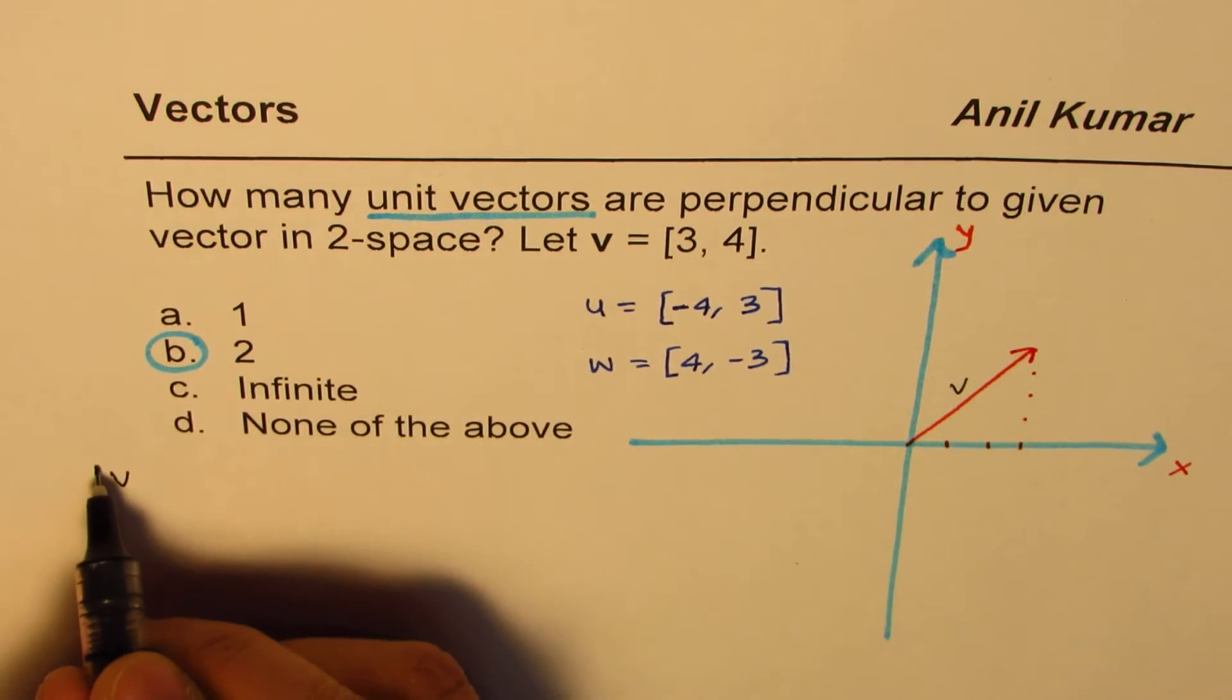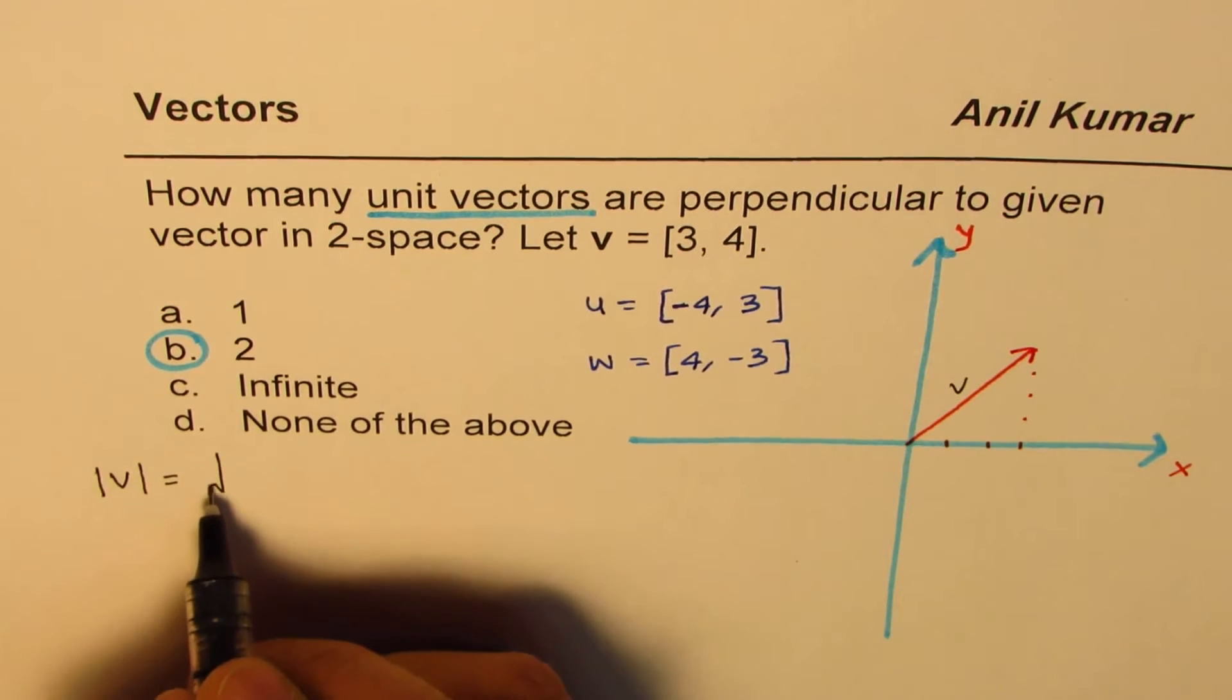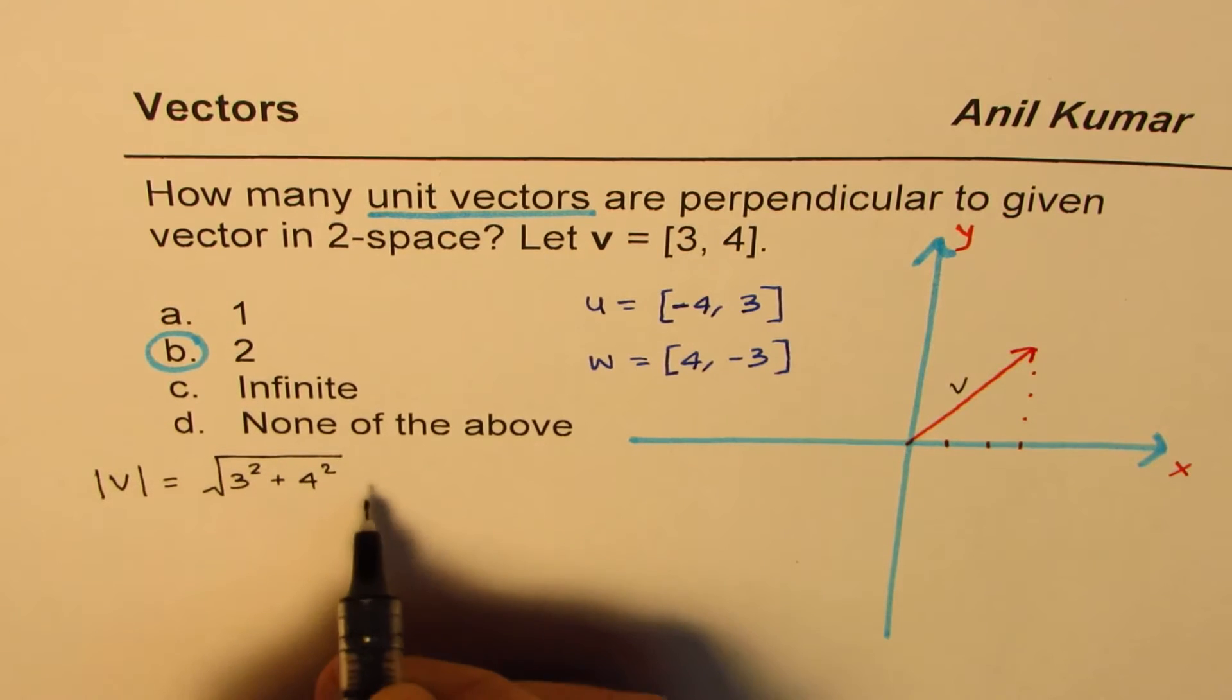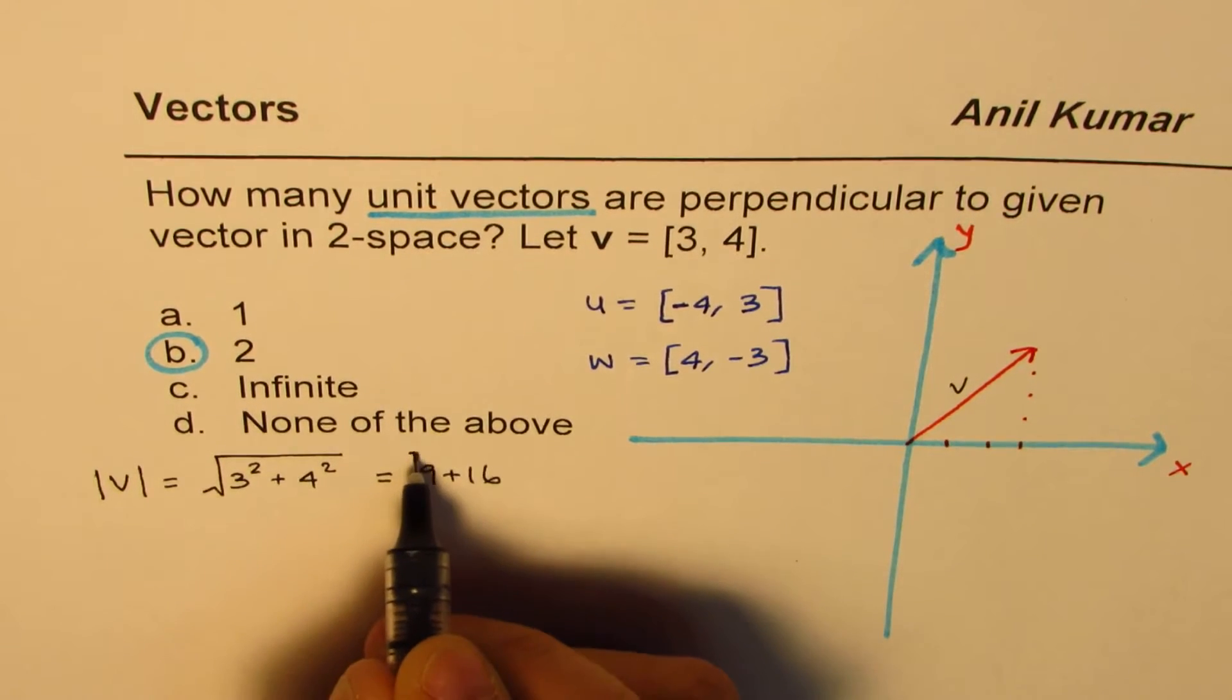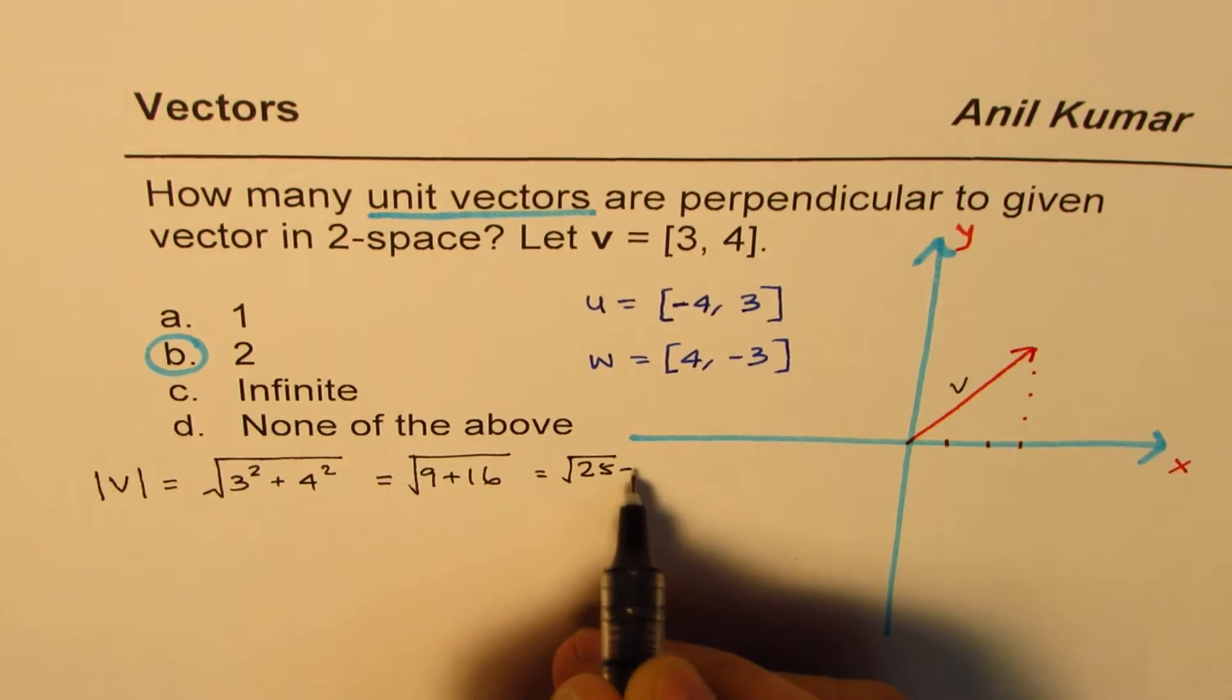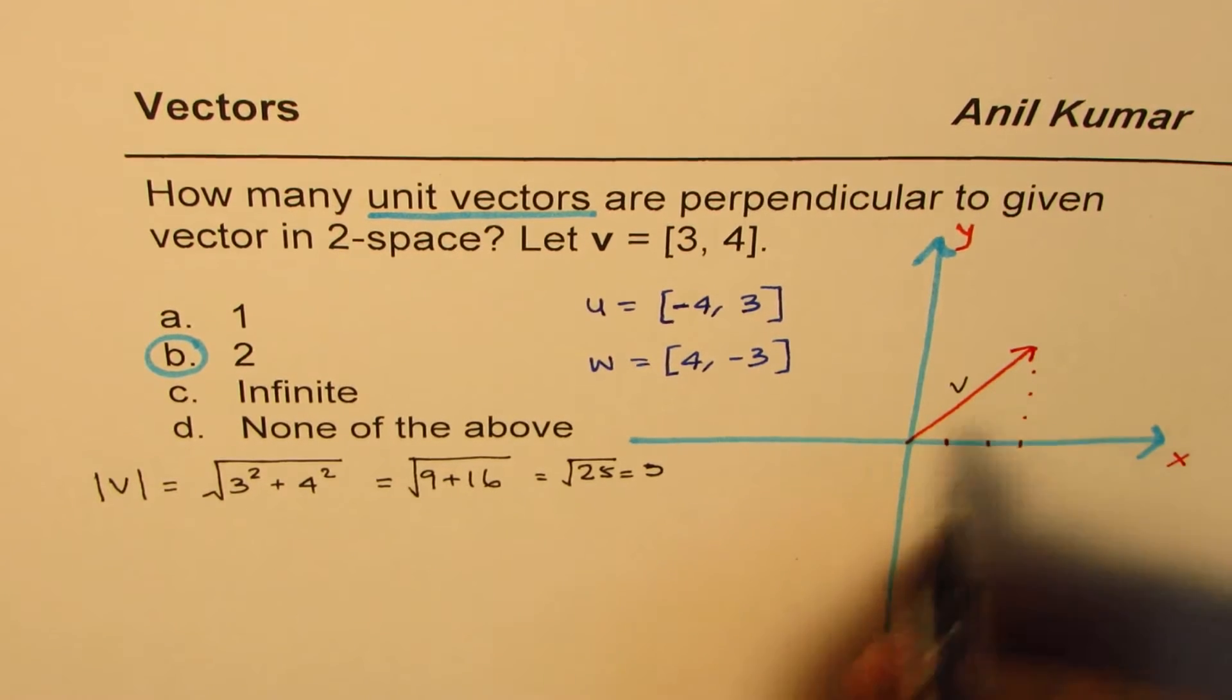Let's find the magnitude of v. It's [3, 4]. Magnitude is square root of 3² plus 4², which is square root of 9 plus 16, and that is square root of 25, which is 5. So this vector has a magnitude of 5.